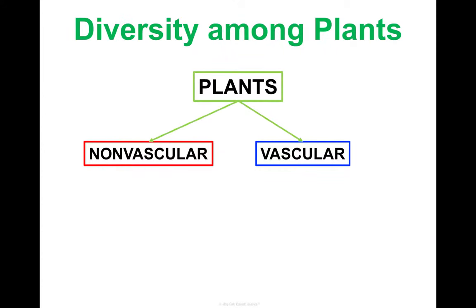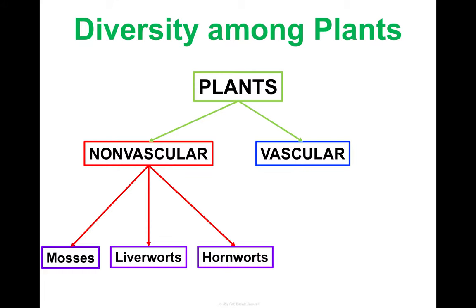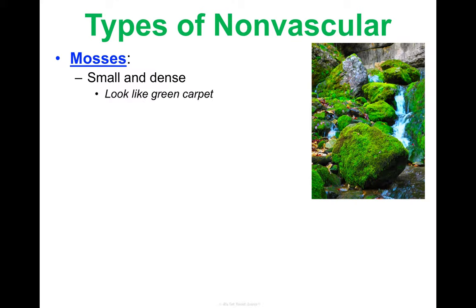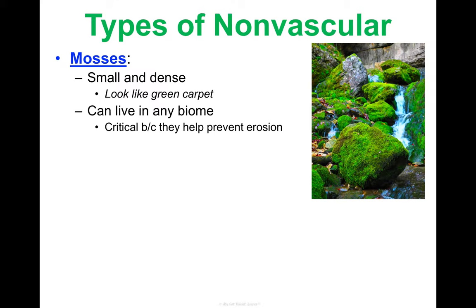If we subdivide nonvascular plants further, we get mosses, liverworts, and hornworts. Mosses are really small and dense — the best description is fuzzy green carpet. Mosses can live in any biome: the tundra, a rainforest, a deciduous forest. This is important because mosses are a very critical organism — they can help prevent erosion through how they cover and protect different surfaces.